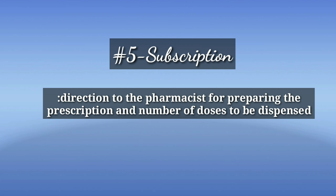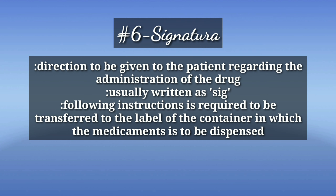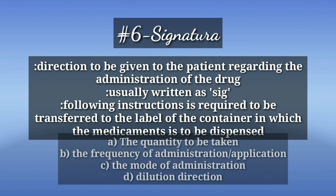The sixth part of the prescription is the signature. This consists of directions to be given to the patient regarding the administration of the drug, and it is usually written as 'Sig' (S-I-G) on the prescription. The following instructions given in the prescription are required to be transferred to the label of the container: the quantity to be taken, the frequency of administration or application, the mode of administration, and dilution.